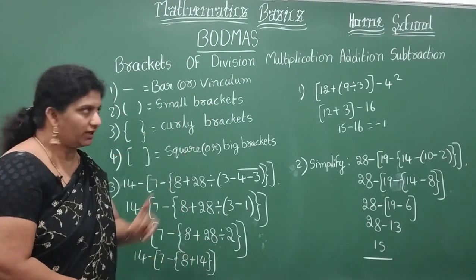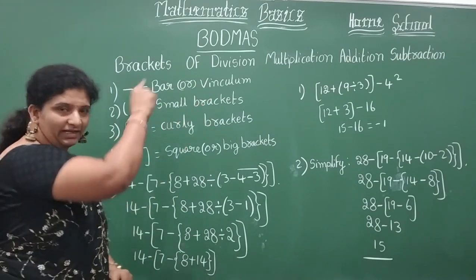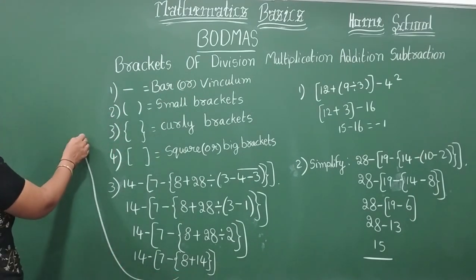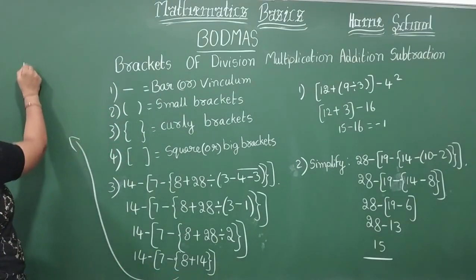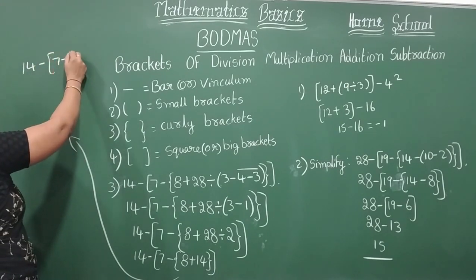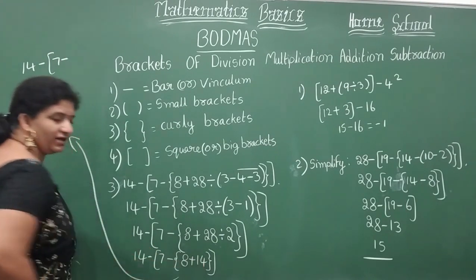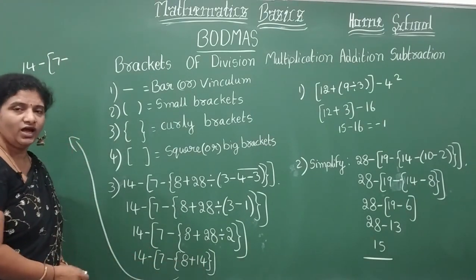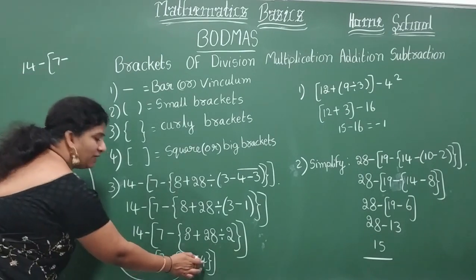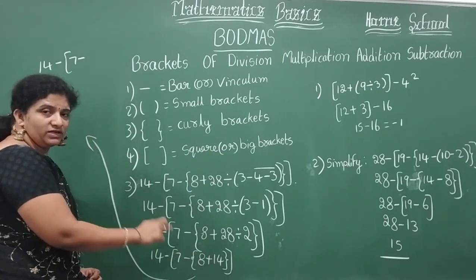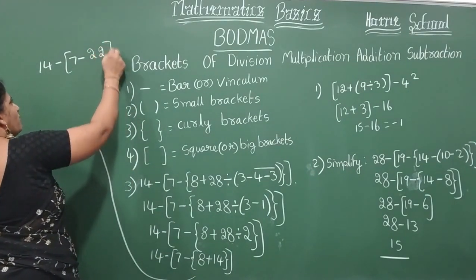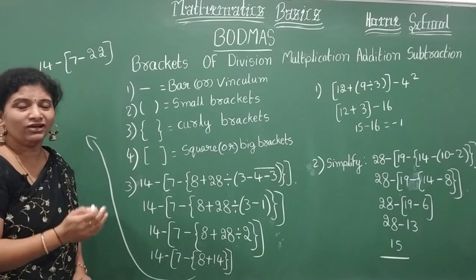After division what we need to do? Multiplication anything not there. So next step is addition. So let's add this children. Look here everybody. 14 minus 7 minus. What is the curl bracket here? 8 plus 14. 8 plus 14 is 22. So always your mind should run with the adding of the numbers.